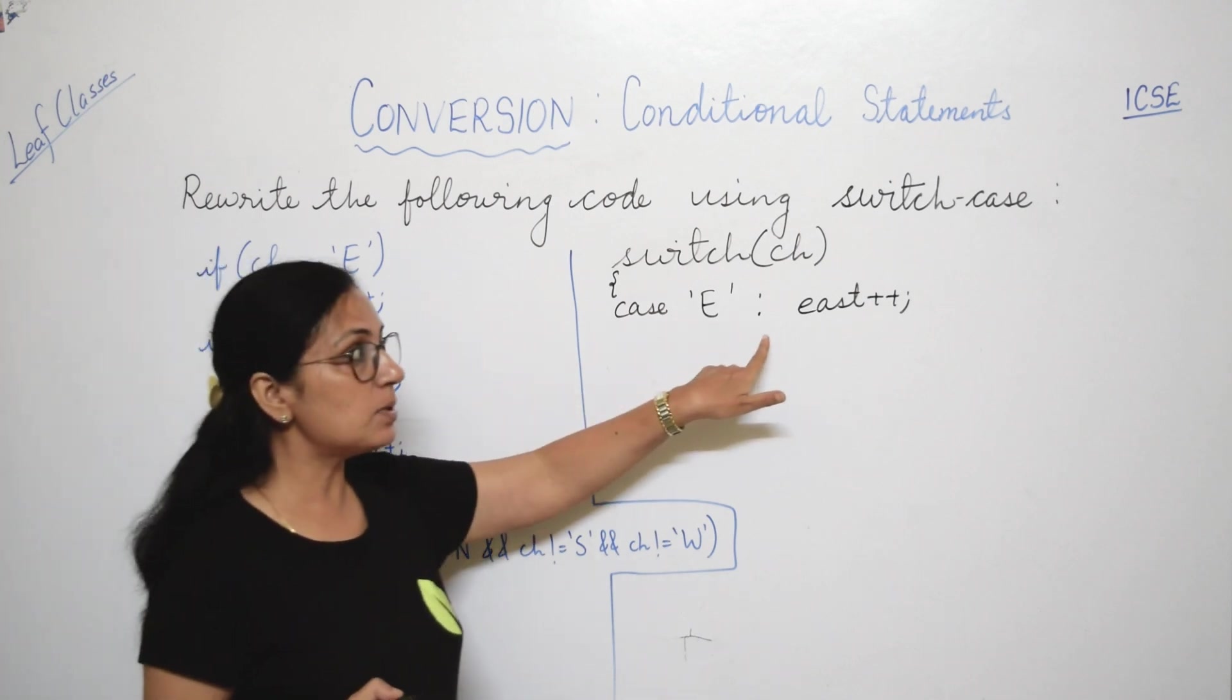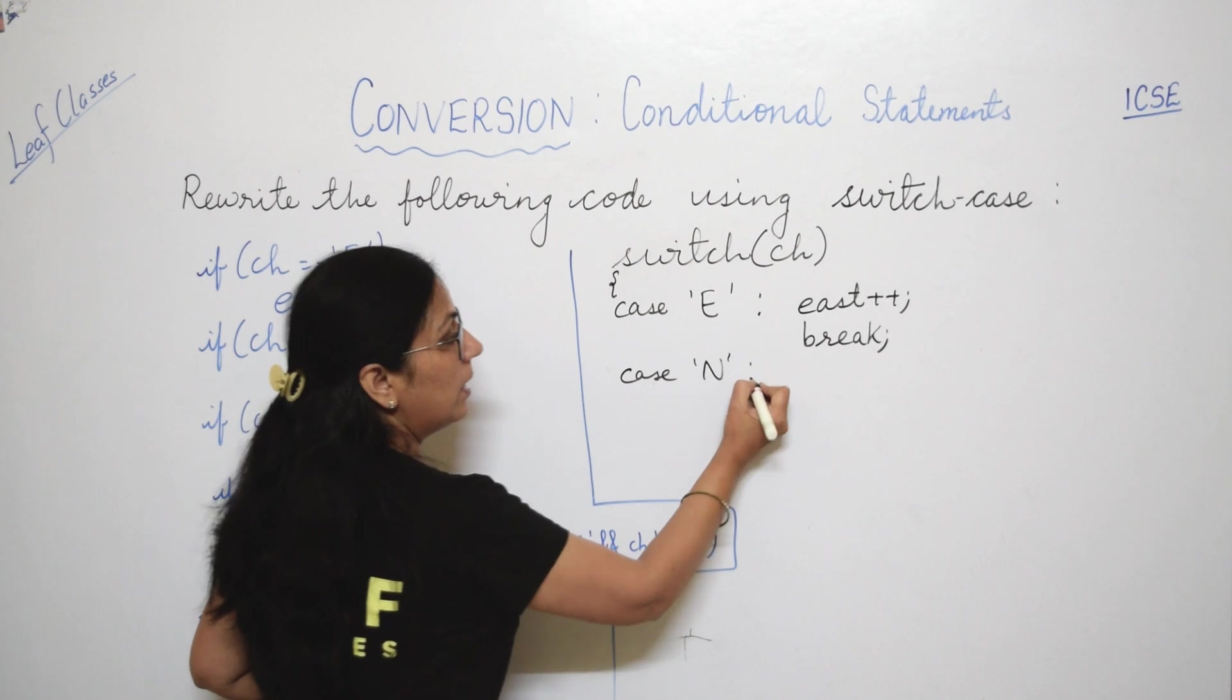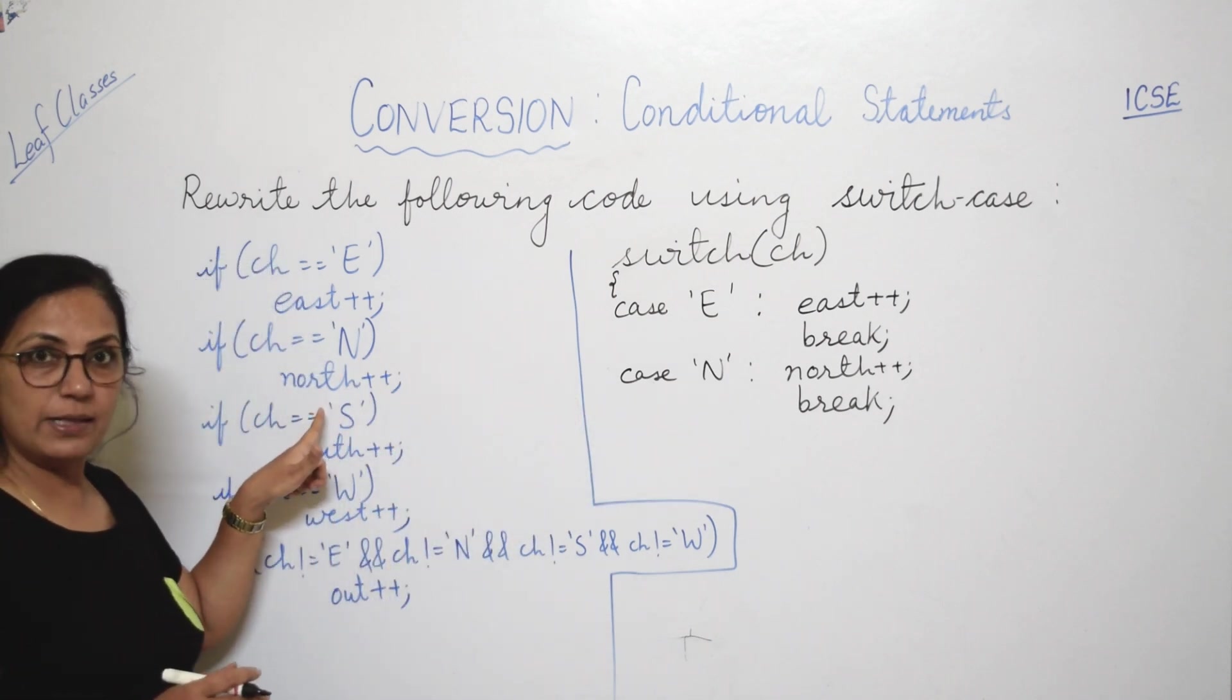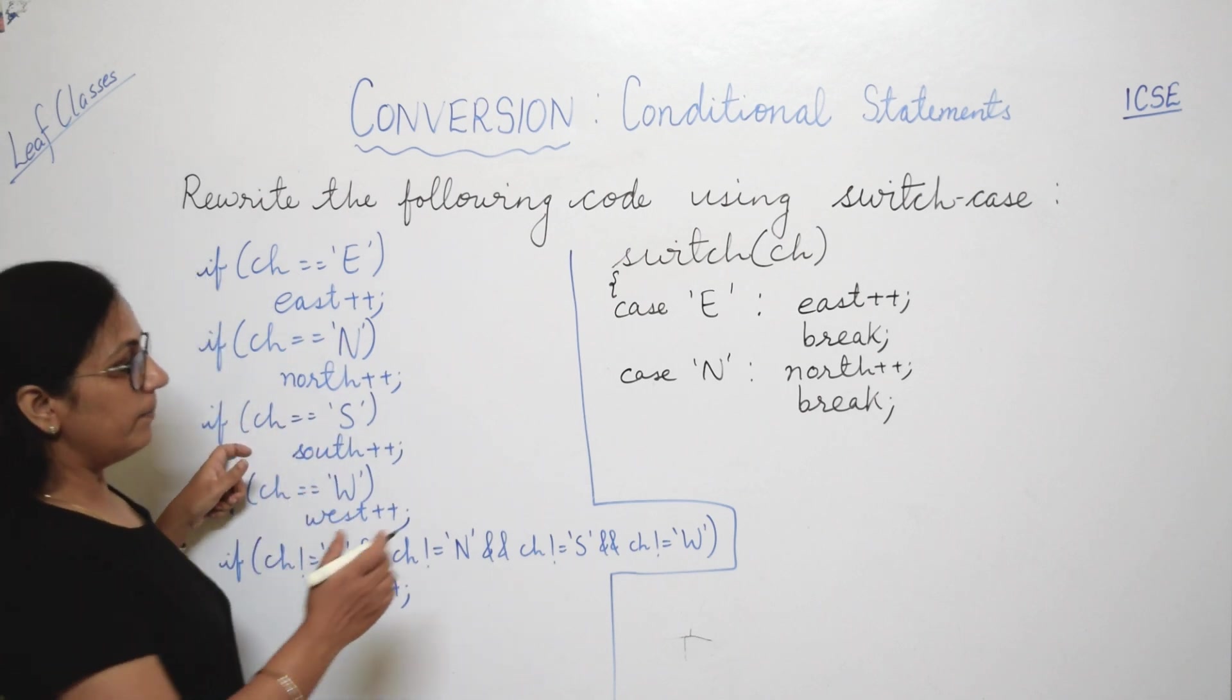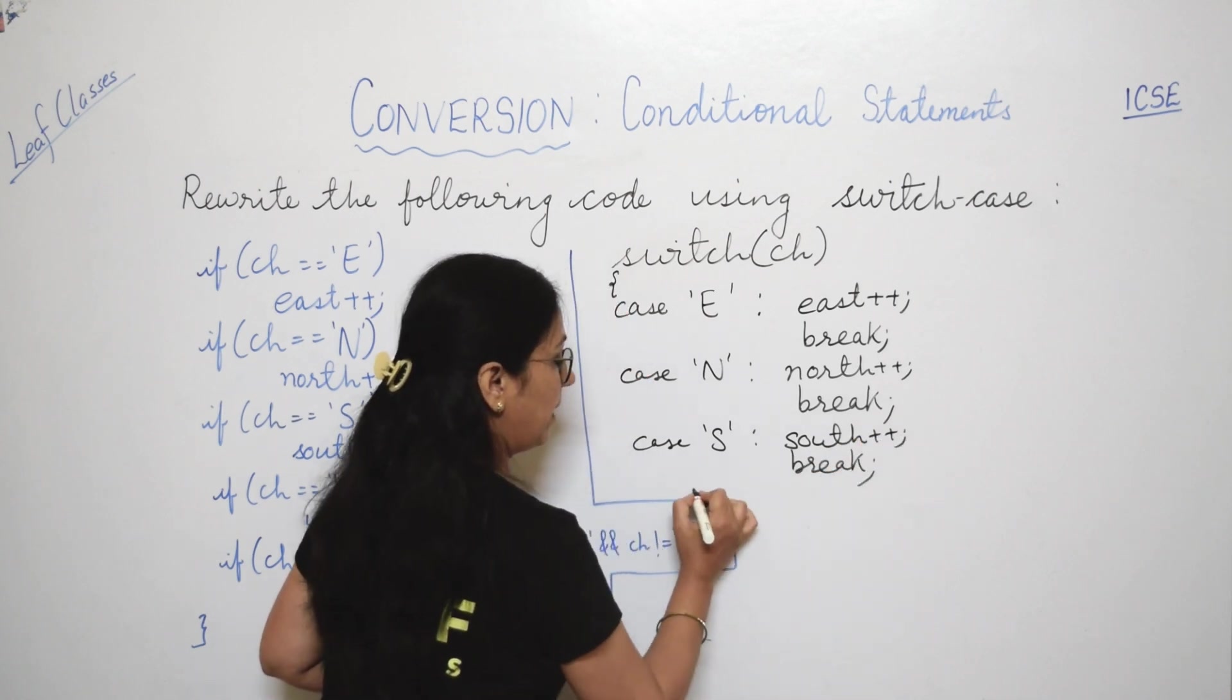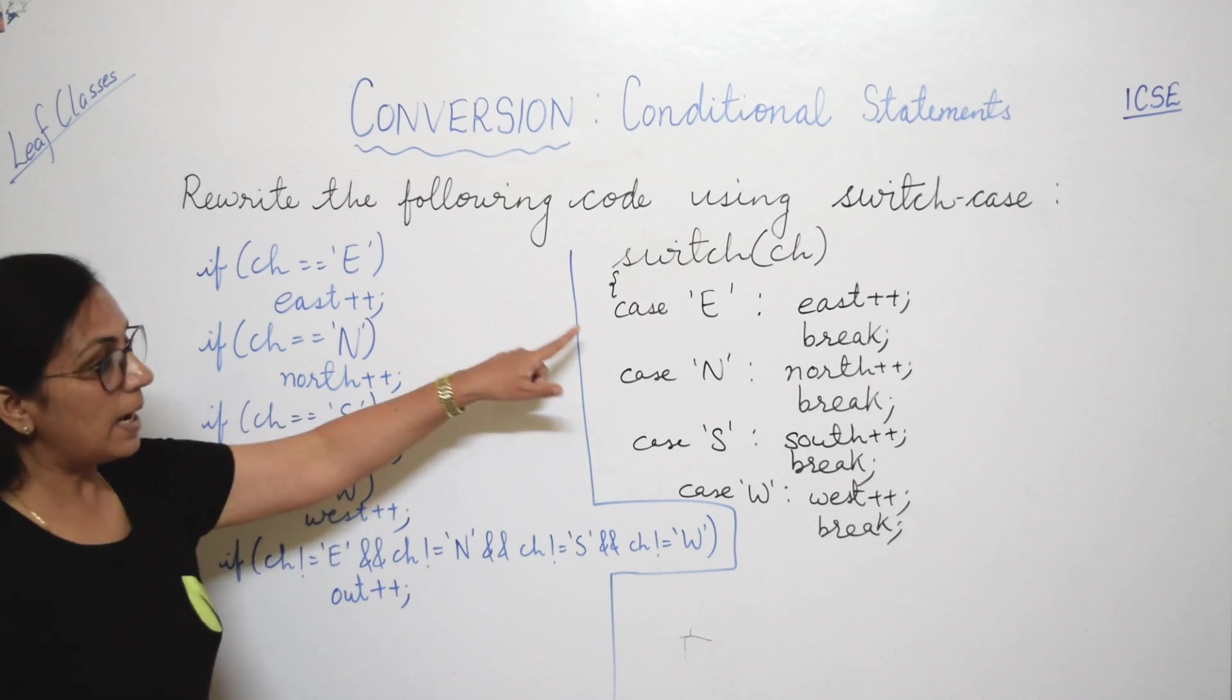Lekhen hum case mein last statement kaunsa denge? Break denge. Hamesha last statement of each case will be break. Next value kya hai? Case N, right? Now here what is the statement? North plus plus. So you will write north plus plus and give the break statement. Children please note that break statement will not be given in if-else block, right? Here only when you are converting it to switch, you have to write break statement as the last statement of each case. Next hai? Case S, and here you have south plus plus semicolon. Yahaan pe hum likhenge south plus plus and again break statement. Aur us ke baad aapka hai case W.